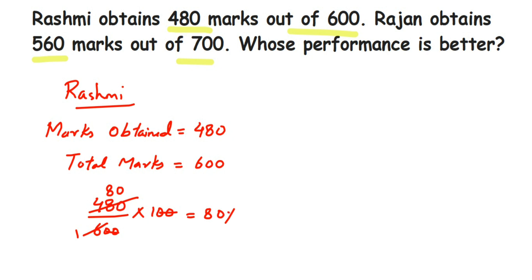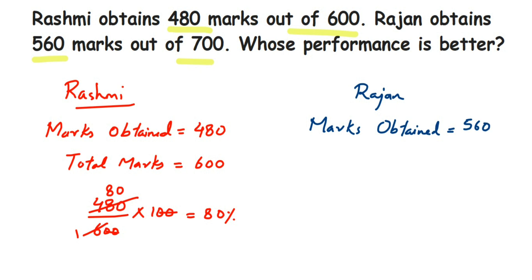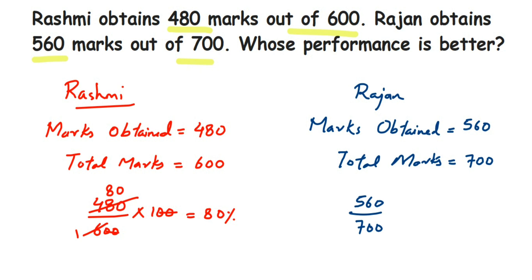Now we'll do the same thing for Rajan. In case of Rajan, marks obtained is 560 and total marks is 700. We need to find the percentage: 560 out of 700, multiplied by 100.